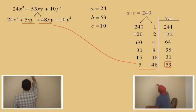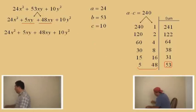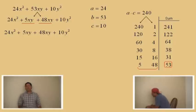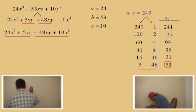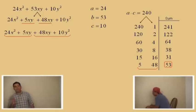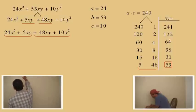There it is. Right there. Notice our 5 and 48. We rewrote the middle term there. And now let's write down our answer here. 24x squared plus 5xy plus 48xy plus 10y squared. We got our 4 terms. So what do we do? Form 2 groups. We got our 2 groups there.